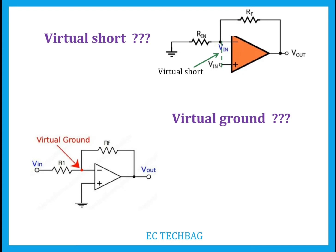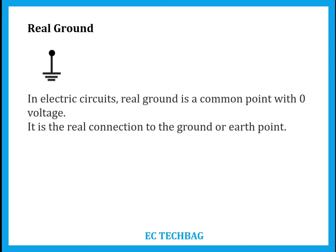You are all familiar with real ground. In electric circuits, real ground is a common point with zero voltage — a point which is physically connected with ground. Here this point is physically connected with the ground, so it is called real ground.